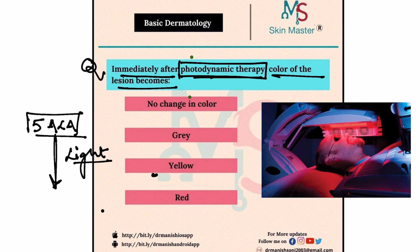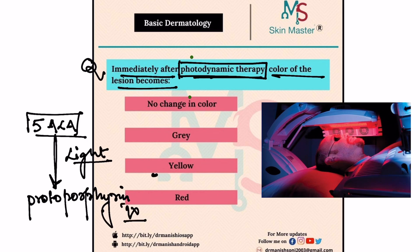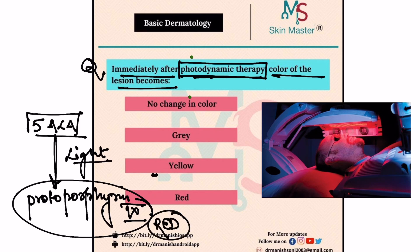What happens is that 5-aminolevulinic acid converts into protoporphyrin IX, which is red in color — so the answer is that the lesions become red. This porphyrin is cytotoxic to these cells, which leads to the destruction of pre-malignant or malignant cells.